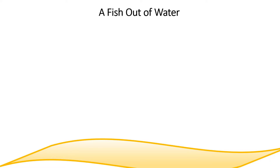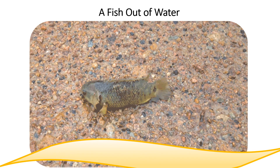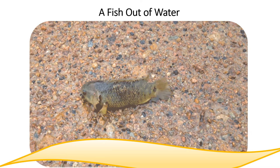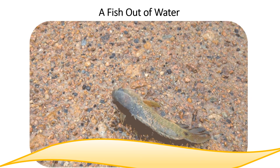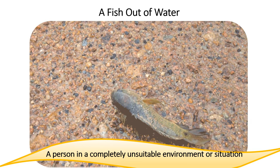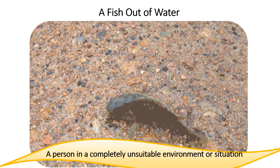Now, take this example. Just think for a while — if you hear the idiom 'a fish out of water' for the very first time, then what would you expect the meaning to be? Like this, right? Where a fish is writhing out of water trying to get back in. If you really mean so, you are wrong. It is actually an idiom which means a person in a completely unsuitable environment or situation — someone who is not happy and wants to leave.